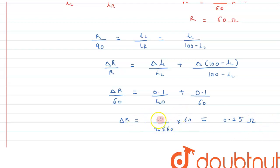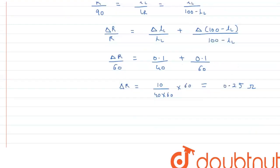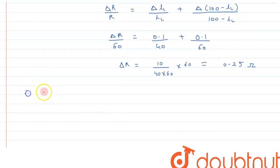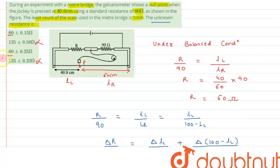This is the value of error in resistance we are getting. Therefore we can say R plus or minus delta R in terms of error can be written as 60 plus or minus 0.25 ohms. So this is the right answer to this question which matches with option C.